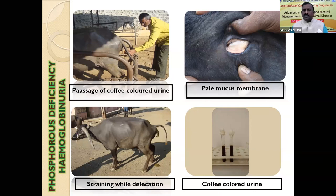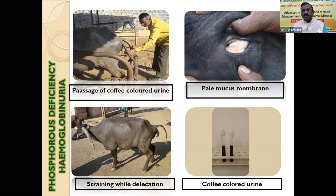In 15% of cases, the body temperature will be subnormal, particularly those cases presented during winter in the early morning hours. Cases presented during the hot part of the day in summer may be elevated — about 10 to 15% elevated, and in around 17% of cases the body temperature is normal. In a recent recording, 65% of cases were recorded between two to four weeks of calving. But this disease may occur in advanced pregnancy or at any stage of lactation.